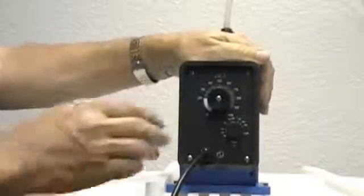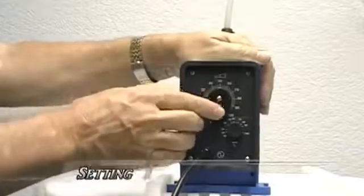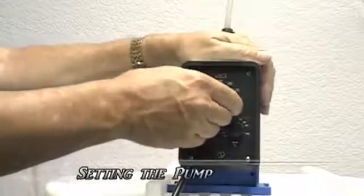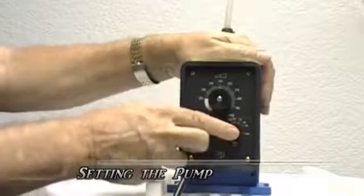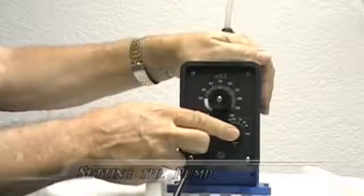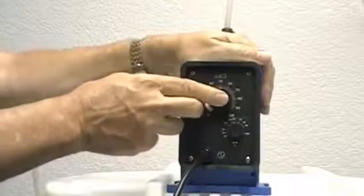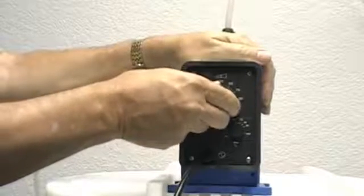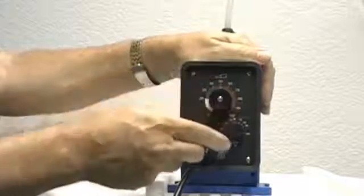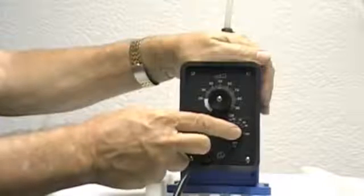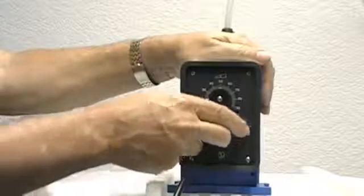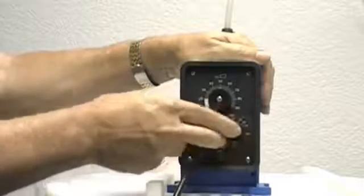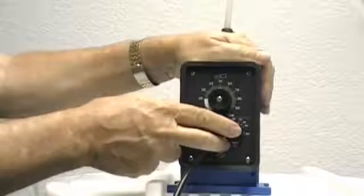The Pulsatron A Plus pump has two adjustments. This adjustment is the stroke length adjustment and this adjustment is the pulse rate adjustment. The stroke length adjustment adjusts the amount of flow per stroke. The stroke rate adjustment adjusts the number of strokes per minute. At 100% there would be 125 strokes per minute.